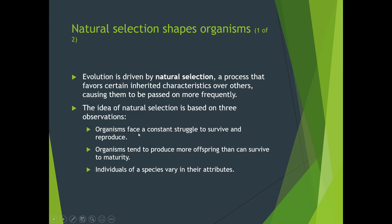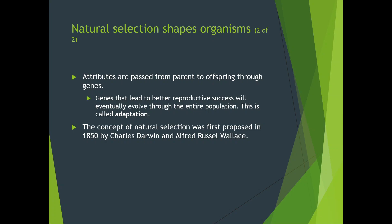First, organisms face a constant struggle to survive and reproduce — if you have an advantage, you'll survive and reproduce more due to your genetic mutation. Second, organisms tend to produce more offspring than can survive to maturity — we produce more babies than typically make it, and this is even true for humans. Third, individuals of a species vary in their attributes — everybody looks a little different, and attributes are passed on from parent to offspring through genes. Genes that lead to better reproductive success will eventually spread through the entire population.